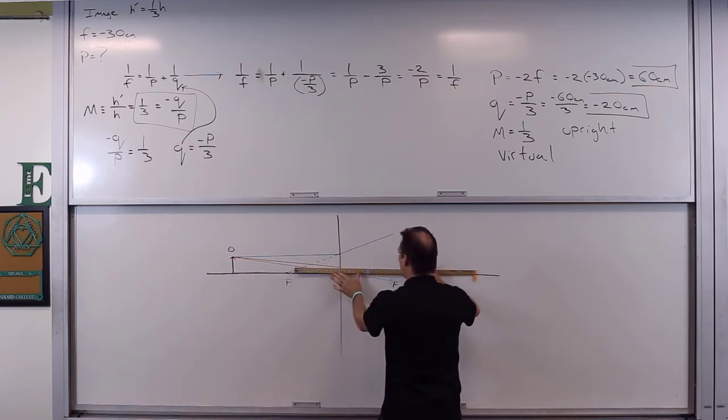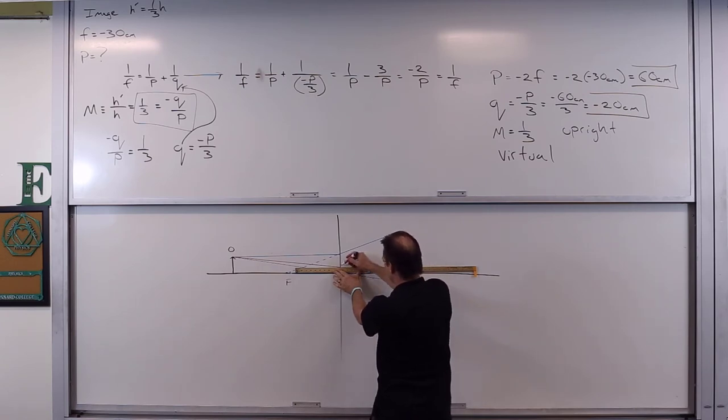But then it's going to hit the lens. What's it going to do when it hits the lens? It is going to refract parallel to the principal axis.